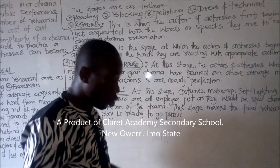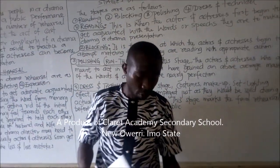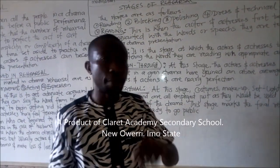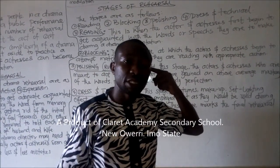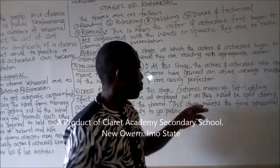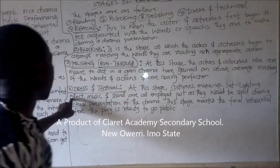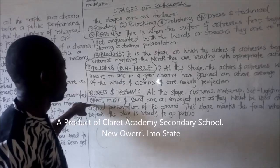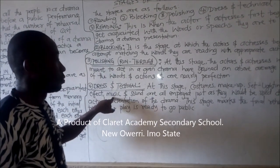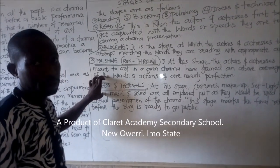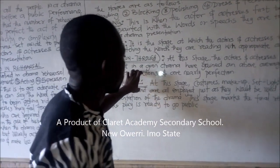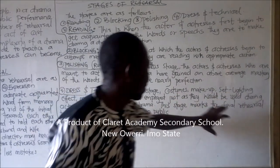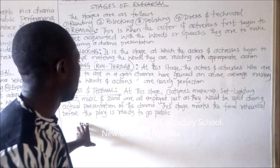Under dress and technical, we have costumes — which include clothes, mask, shoes, socks, and cap — as well as makeup materials such as eyelashes, eye pencil, and powder. The set light effects come from the video person, and music and sound are also included. This stands as the last and final rehearsal before the play is ready to go public.